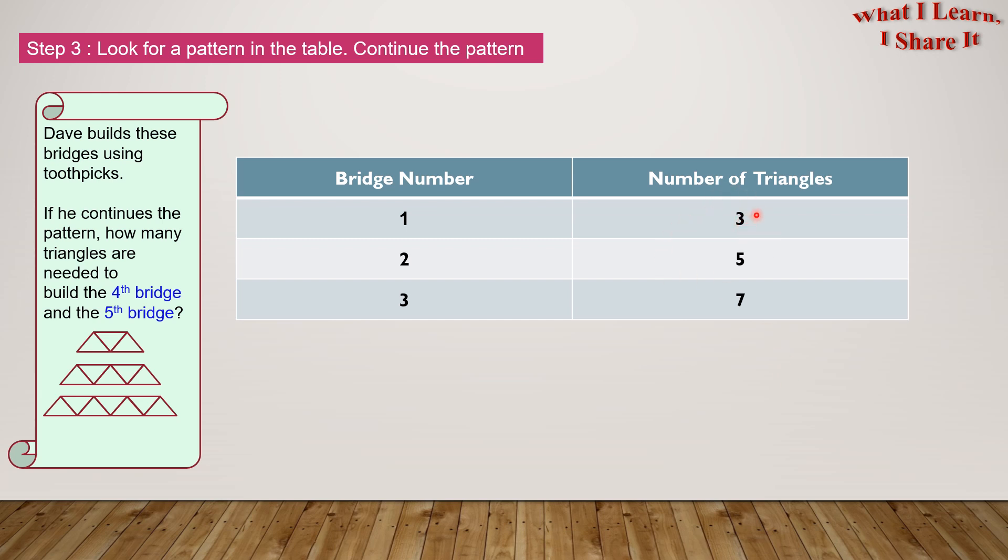We find the pattern in the number of triangles. So 3 plus 2 equals 5, and also 5 plus 2 equals 7.